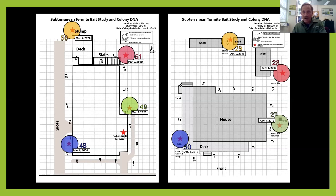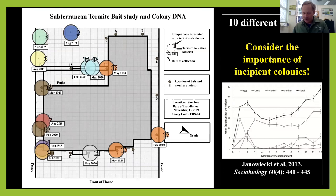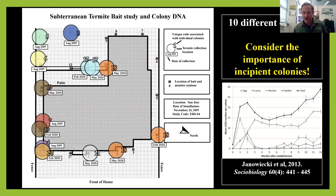We're also measuring how much time it takes for termites to find baits in the ground, considering season as a factor. We found that if baits are installed at the beginning of the wet season — in our study, December 16th — the time required for termites to find those baits can be significantly reduced. At some homes we're seeing a lot of termite colonies, suggesting incipient colonies developing in areas with a lot of swarming; those colonies may then compete with one another, with some declining or disappearing.